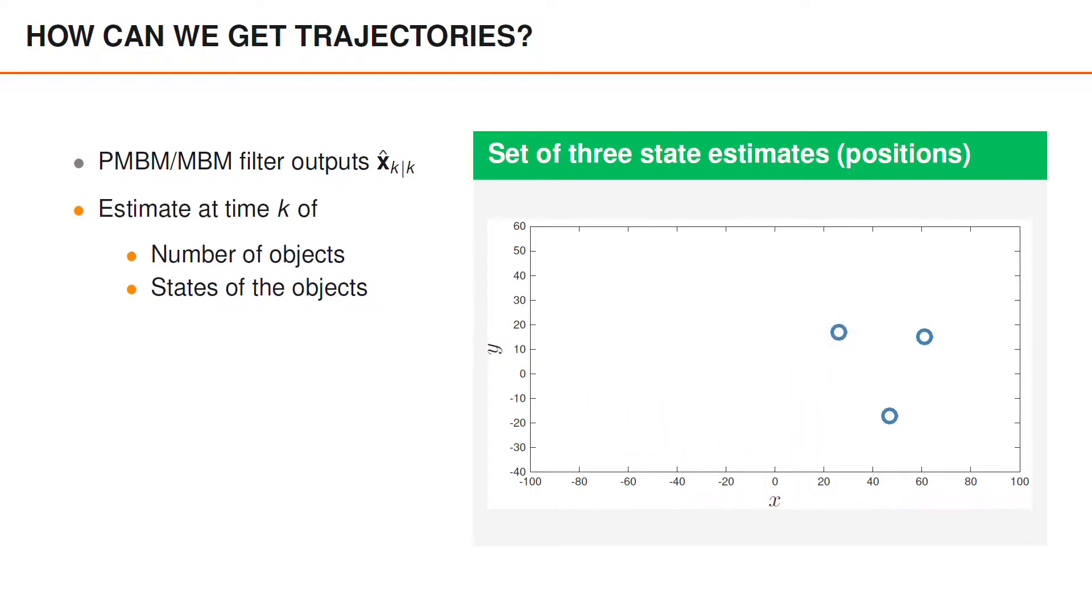So what we have at time k is an estimate of the number of objects, in this example 3, and the states of the objects. In the example we can see the positions.